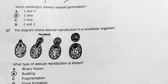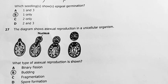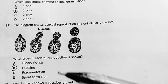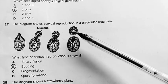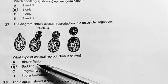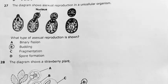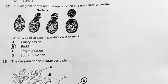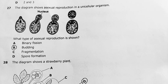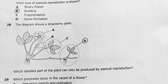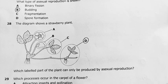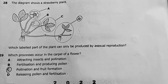Question 27: the diagram shows asexual reproduction of a unicellular organism. What type of asexual reproduction is shown? It's budding. I cannot say binary fission because a smaller portion is budding from a bigger one — binary fission produces equal daughter cells. It's not fragmentation or spore formation. Our answer is B.